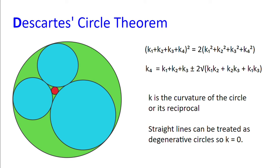K1 plus K2 plus K3 plus K4 squared equals 2 multiplied by K1 squared plus K2 squared plus K3 squared plus K4 squared. Where K is the curvature of the circle, which is also the reciprocal of its radius.